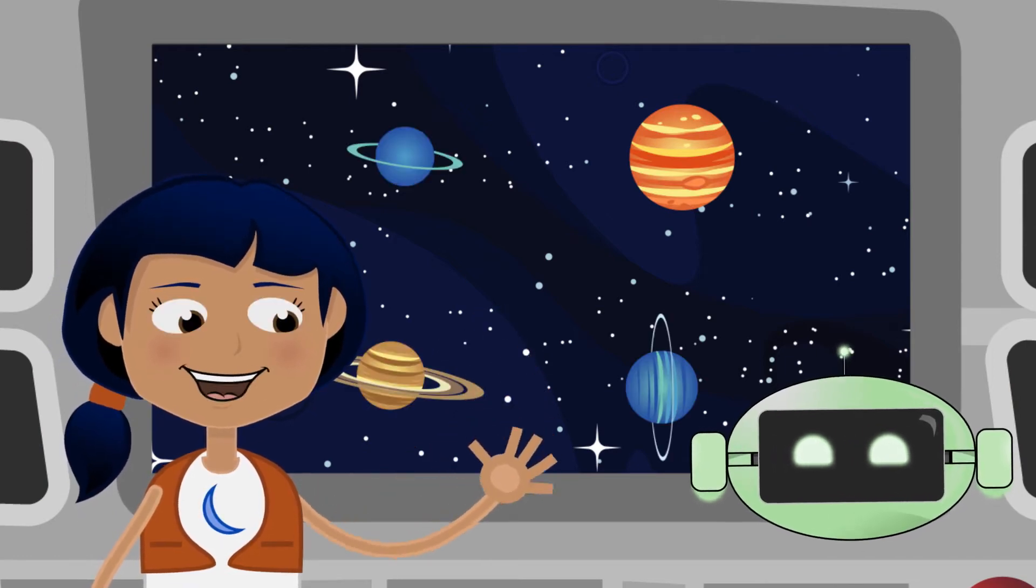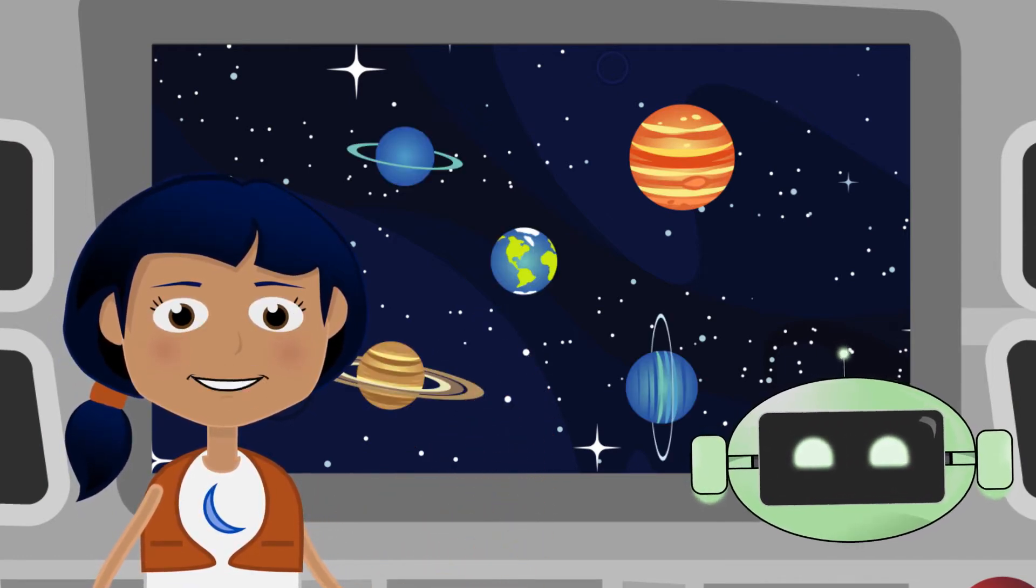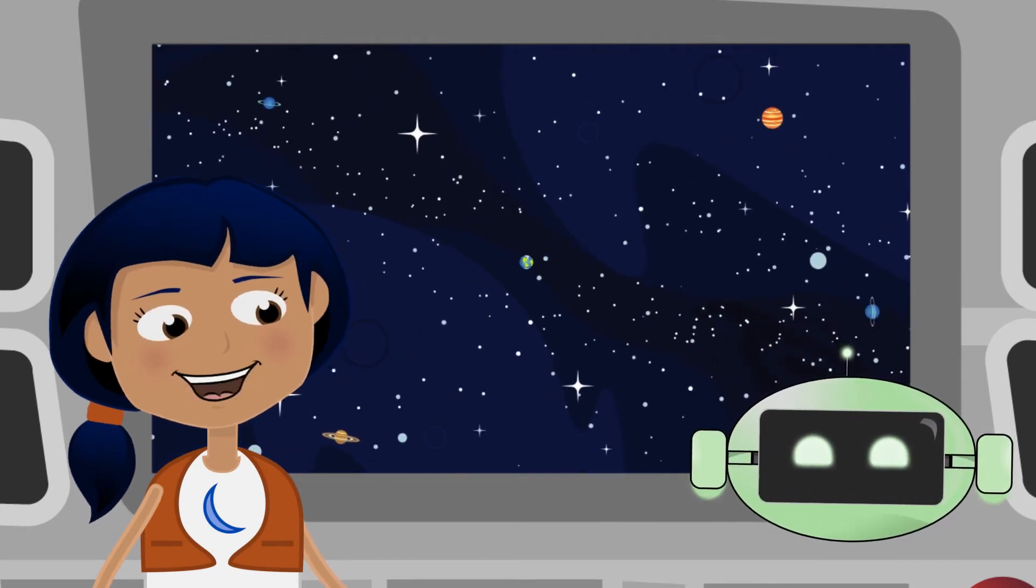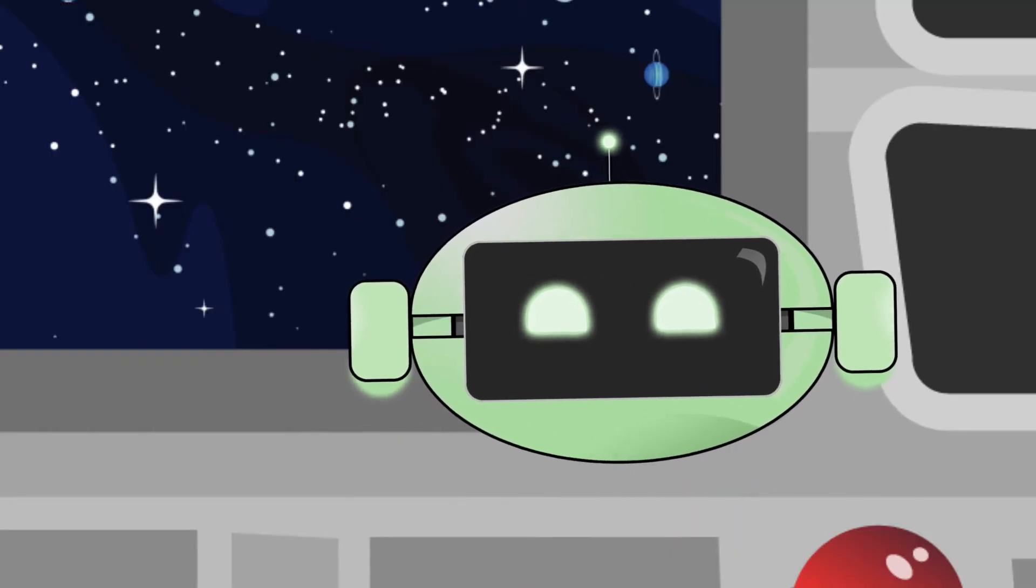Exactly. None of these planets have a solid surface like Earth. Some may have a small, solid inner core, but because they're so far away, there's still a lot we don't know about some of these planets. Well, what do we know about them?